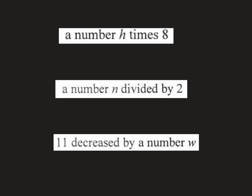For these we have to read exactly what it says and then write it using numbers or variables. It says a number h times 8, so that means we're going to do 8 times h. Now we usually put the numbers first, so 8, and then times h. I'm just going to put the h right next to it because that means times when we're doing algebra. 8h means a number h times 8.